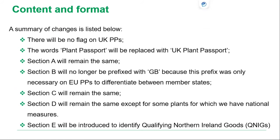There are some slight changes to the format of the UK plant passport. There will be no flag in the top right-hand corner, and the words 'plant passport' have been replaced by 'UK plant passport.' Section A — botanical name — remains the same. Section B will no longer have the GB ISO code at the front, as it was only needed to differentiate between member states. Section C — traceability code — also remains the same. I'll touch on sections D and E shortly regarding country of origin and qualifying Northern Ireland goods.